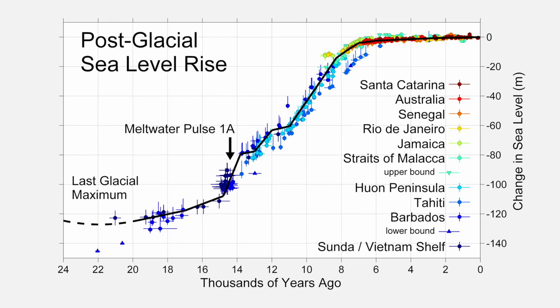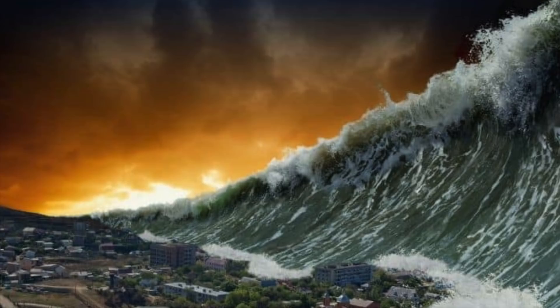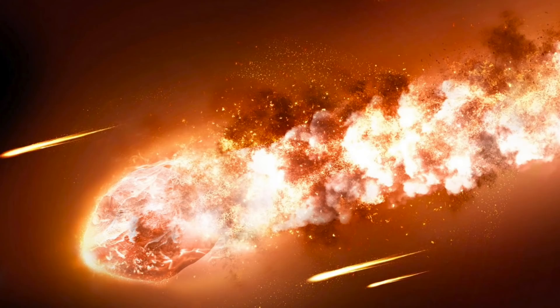3 metres in 50 years is the same as 6 centimetres per year, which is more cataclysmic than meltwater pulse 1A and 1B, but it still doesn't sound like a global cataclysm — unless of course the 3 metre rise happened in less time, whether 10 years, 5 years and so on.